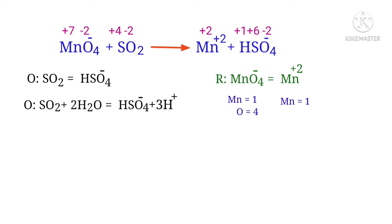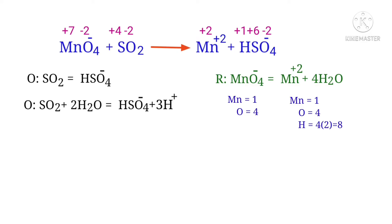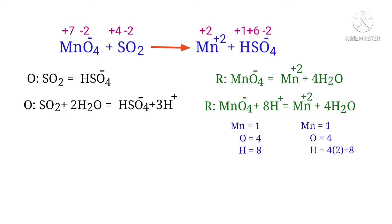Now you can balance the number of atoms in the reduction half reaction. In the reduction half reaction, to balance the oxygen atoms, you can produce water molecules and H plus ions. The oxygen atoms are balanced. Now you can balance the hydrogen atoms — to do this, you can produce H plus ions. The number of atoms are balanced in the reduction half reaction.